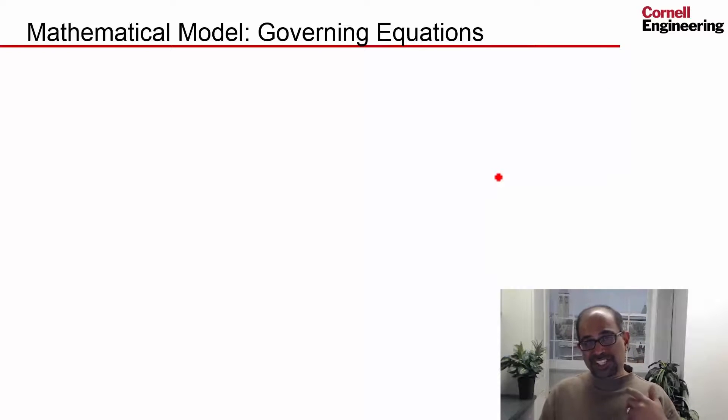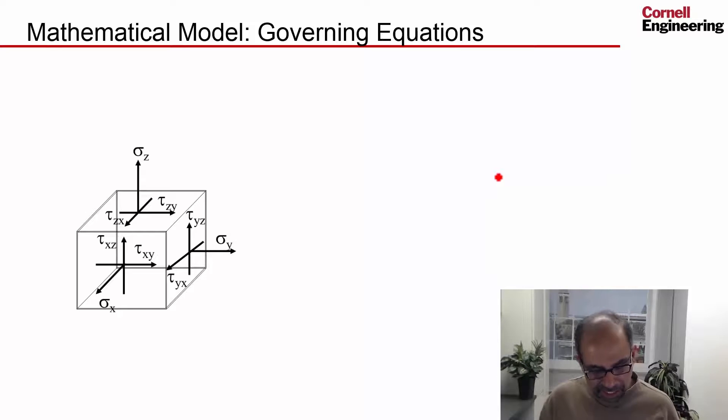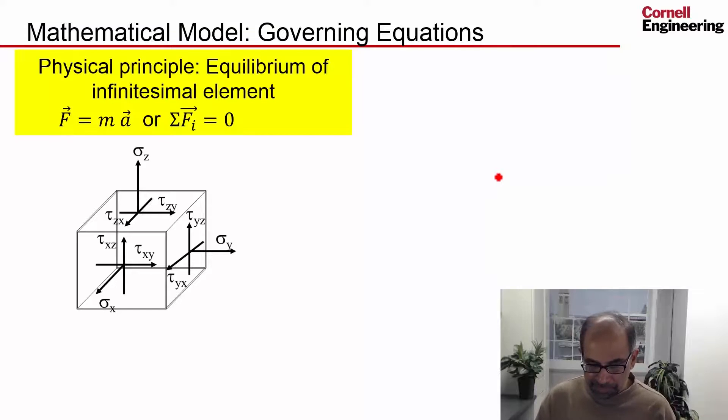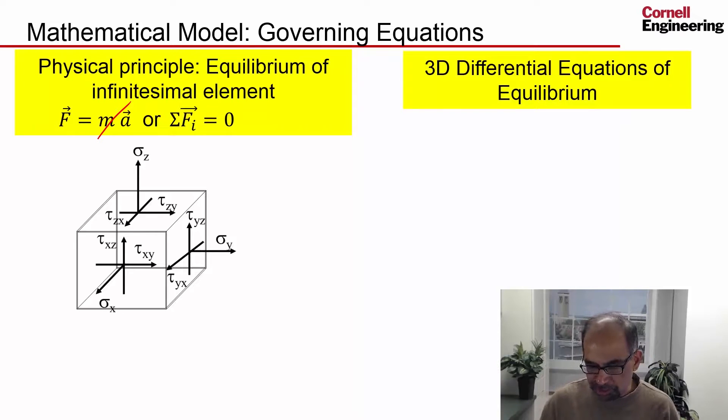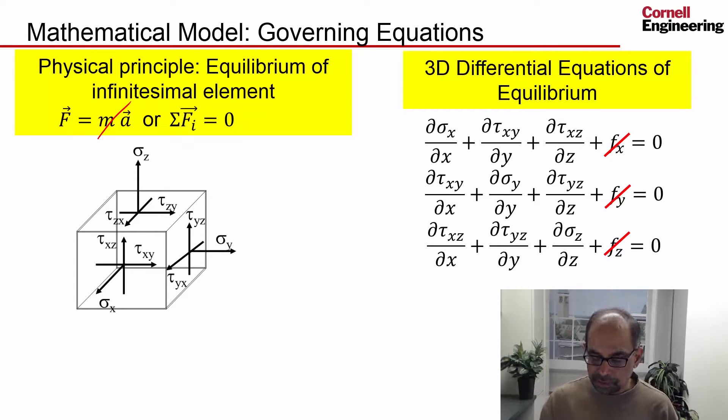First we look at the governing equations and then we look at the boundary conditions. The governing equations are based on equilibrium of an infinitesimal chunk of material within the crank and we write F equal to MA. These ideas we have seen in the big ideas in solid mechanics. The chunk of material deformed, after deformation it just comes to rest so there's no acceleration. We're ignoring any kind of dynamic effects. This is a static analysis, so F equals MA reduces to doing a force balance or a free body diagram on the little chunk of material. And you get the 3D differential equations of equilibrium, which we saw in the big ideas in solid mechanics.